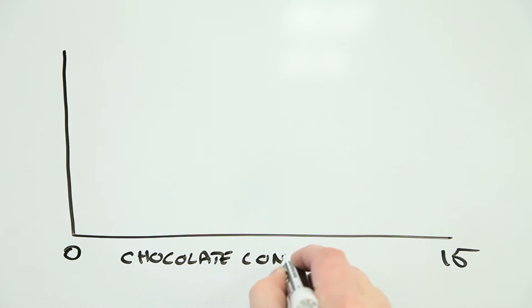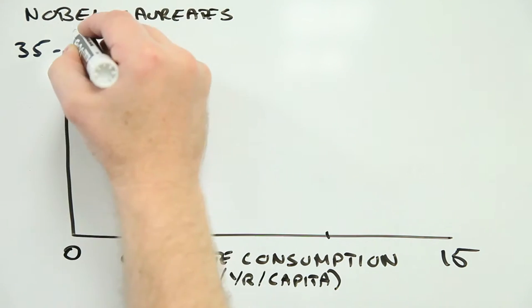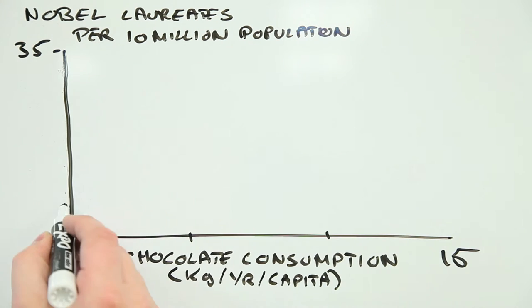Research published in the New England Journal of Medicine shows a clear correlation between the amount of chocolate each person in a country eats and the number of Nobel Prize winners that country has produced.